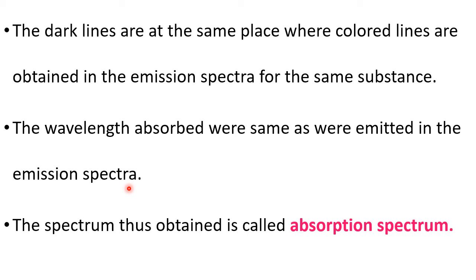One important point: the amount of energy absorbed is equal to the amount of energy given out — strictly according to the law of conservation of energy. That is why emission spectrum is the reciprocal or reverse of the absorption spectrum. Where you see dark lines for a particular sample in absorption, you will see bright lines for the same sample in emission. That is why we say the wavelengths absorbed are the same as those emitted in the emission spectra. This spectrum is called absorption spectrum.